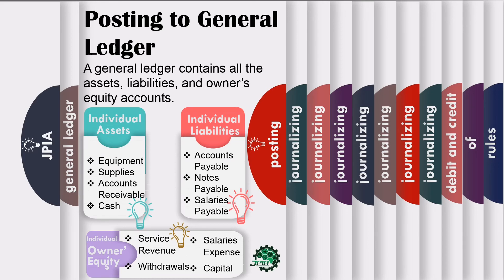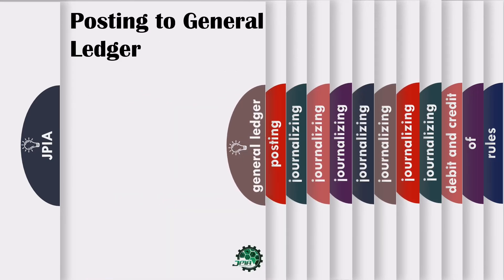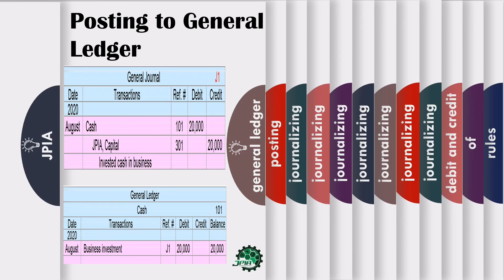These accounts are also classified into two general groups. First, the balance sheet or real accounts, which is composed of assets, liabilities, and owner's equity. The second one is the income statement or nominal accounts, composed of income and expenses. This is how you transfer data from journal to ledger. First, transfer the page number from the journal to the journal reference column of the ledger.